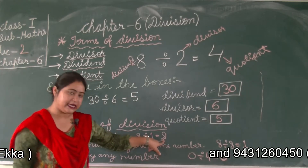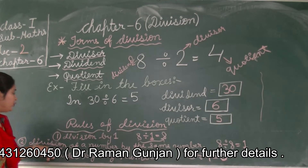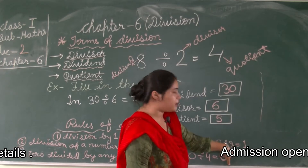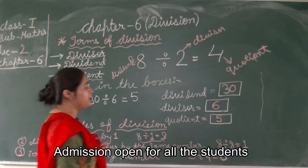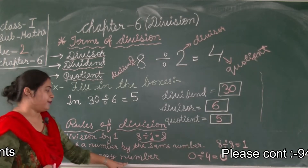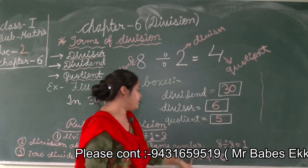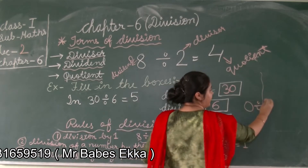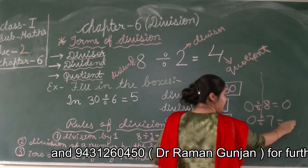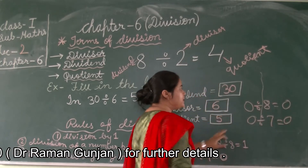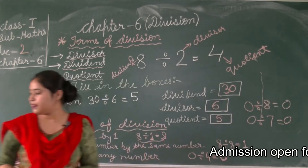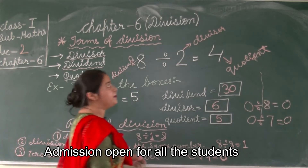To recap: Rule one — division by one: any number divided by 1 gives the number itself, as you can see with 8 divided by 1 equals 8. Rule two — a number divided by the same number gives quotient 1. Rule three — zero divided by any number: if zero is divided by 8 or by 7, we always get zero.